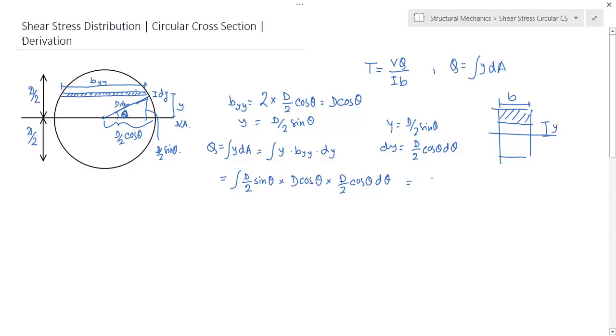So it becomes D³/4 cos² theta sin theta d theta, equals to D³/4.